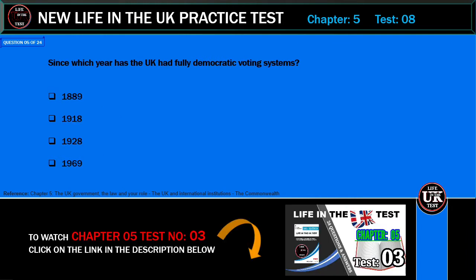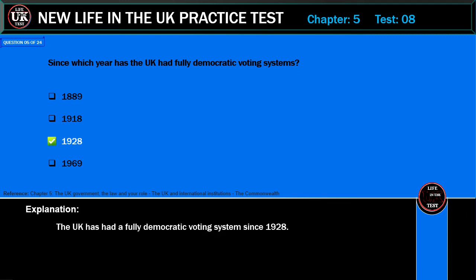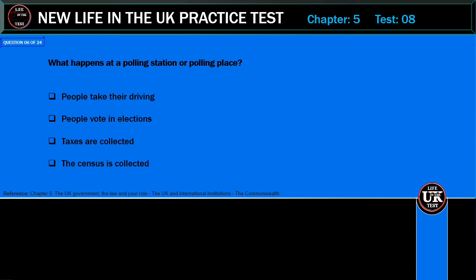Since which year has the UK had a fully democratic voting system? 1889, 1918, 1928, or 1969? Correct answer: 1928. Explanation: The UK has had a fully democratic voting system since 1928.